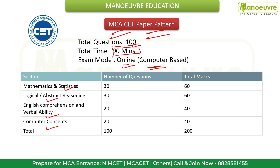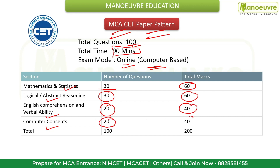For Mathematics and Statistics: 30 questions, 60 total marks. For Logical and Abstract Reasoning: 30 questions, 30 marks. For English Comprehension and Verbal Ability: 20 questions, 40 marks. For Computer Concepts: 20 questions, 40 marks. Overall, the paper is 200 marks with 100 total questions.